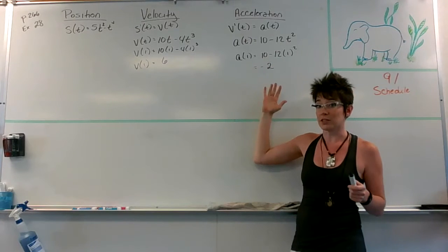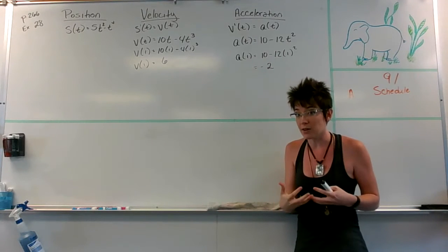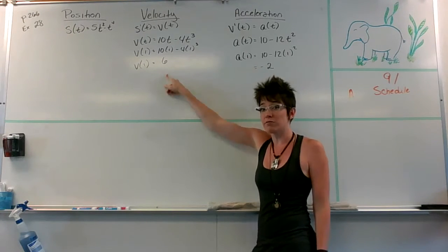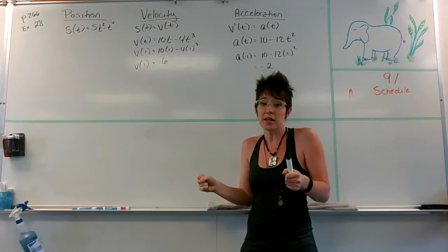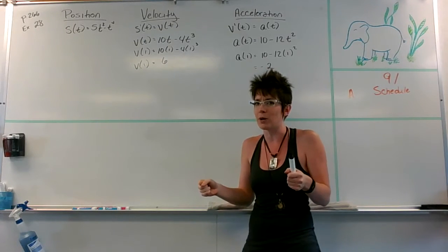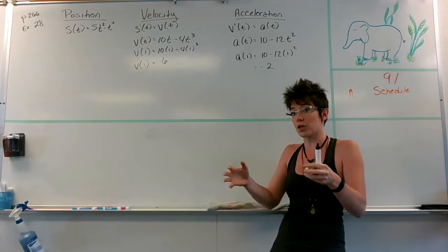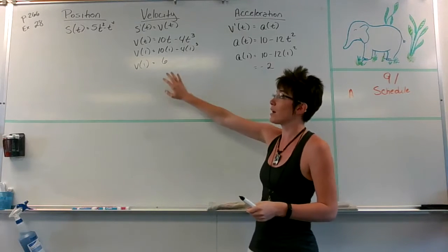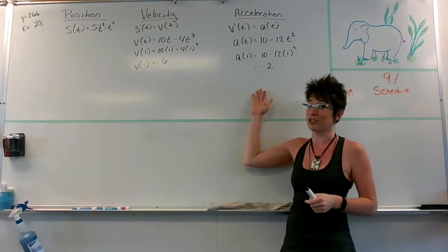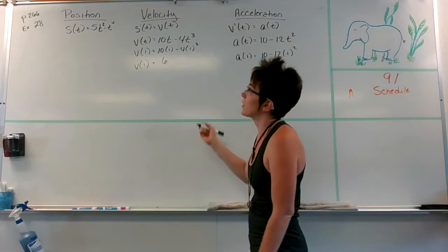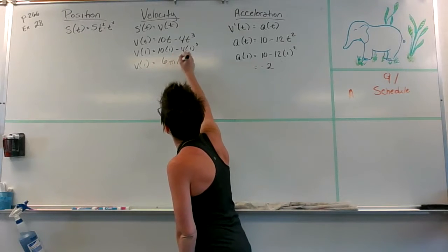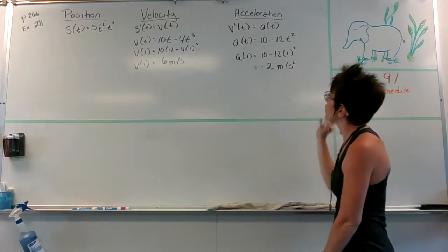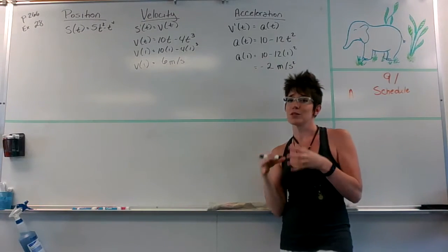When you have negative acceleration, that means you're slowing down. My velocity is still positive — I'm still moving forward — but it's like coming up to a stoplight: you're still moving forward but your foot's on the brake, so you're slowing down. That's how your velocity can be positive but your acceleration is negative. By the way, the units here are meters per second for velocity, and meters per second squared for acceleration.